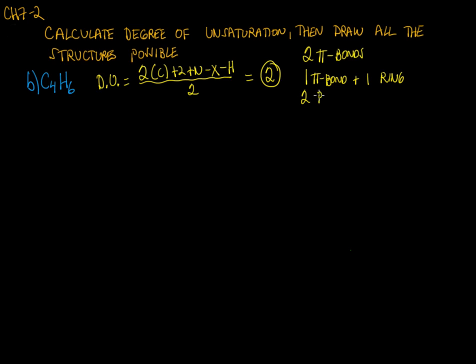Let's think about each of these cases. First of all, we only have four carbons, so it's impossible for us to make two rings. Let's divide the page and think about each possibility.